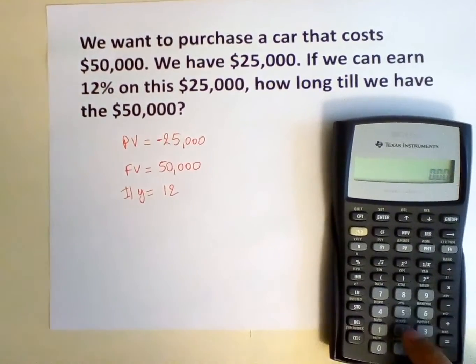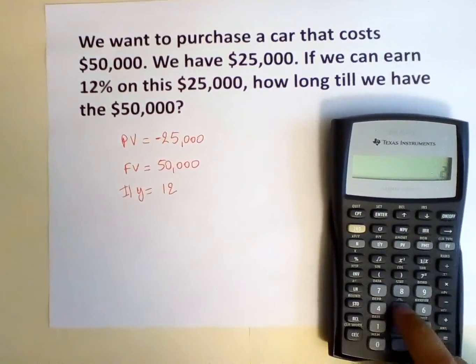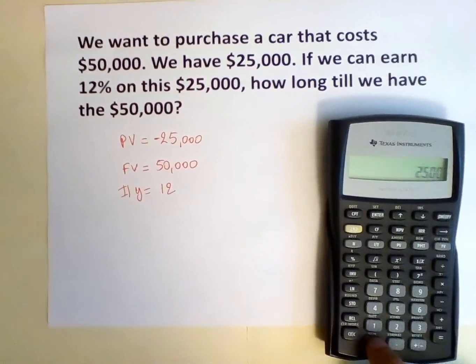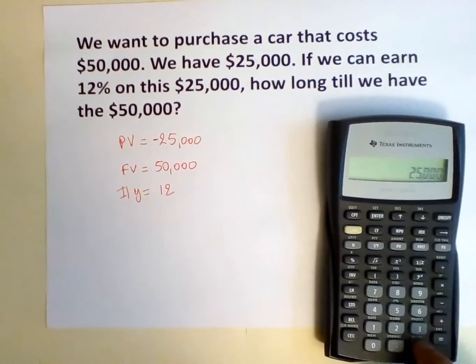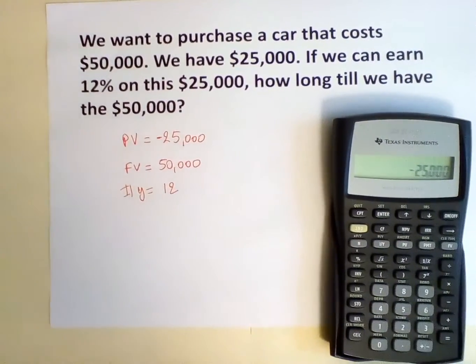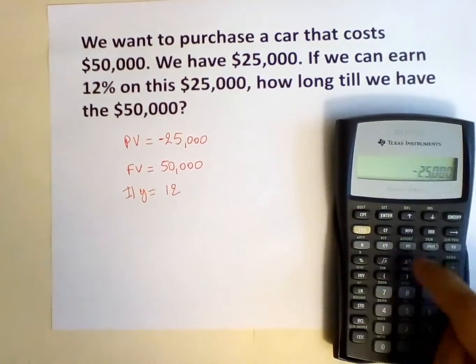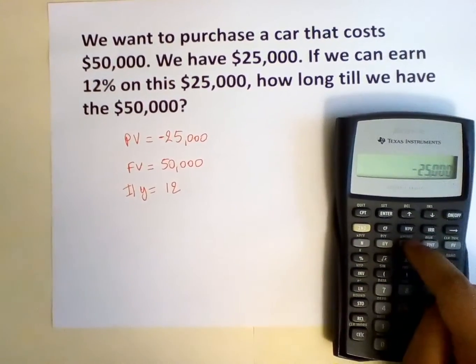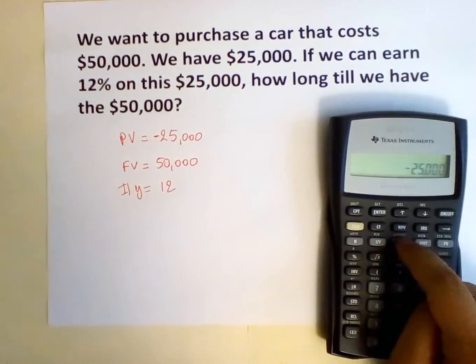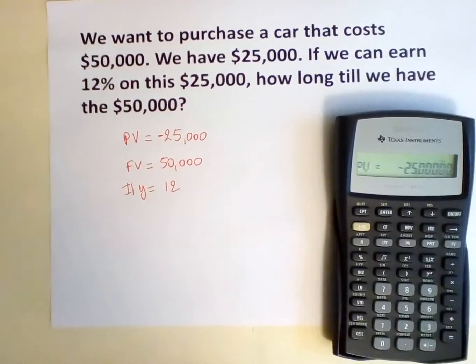Now we input the present value. So negative $25,000 is inputted as PV — we hit the PV button.